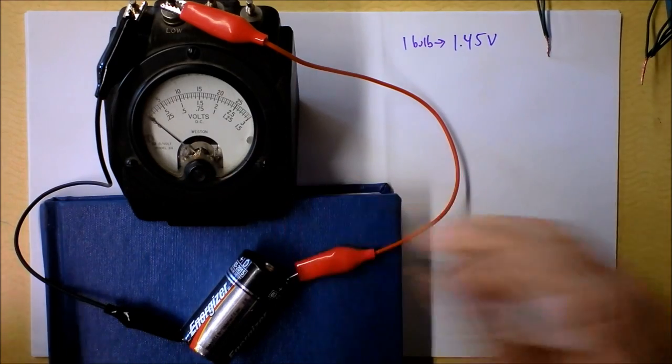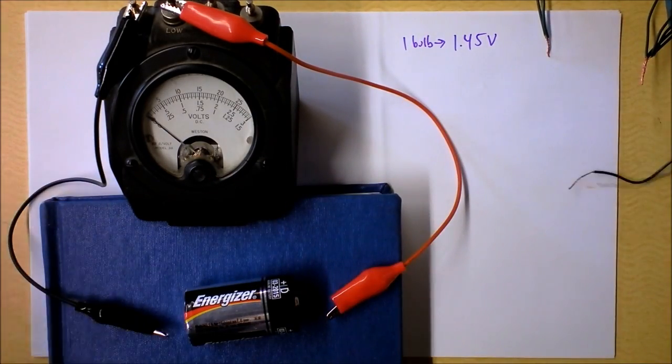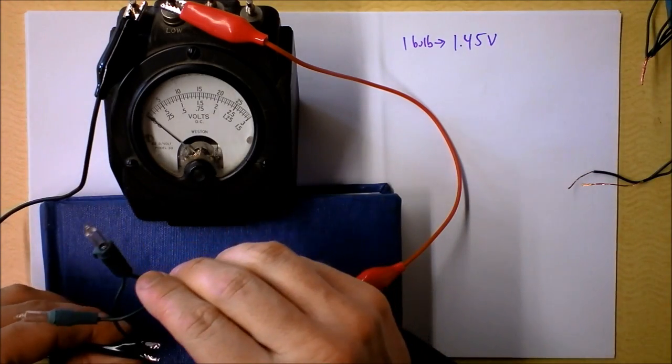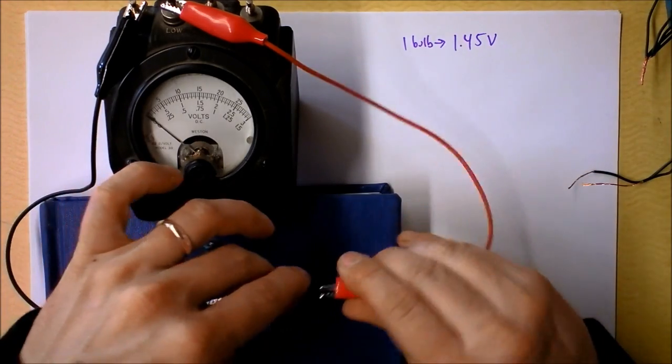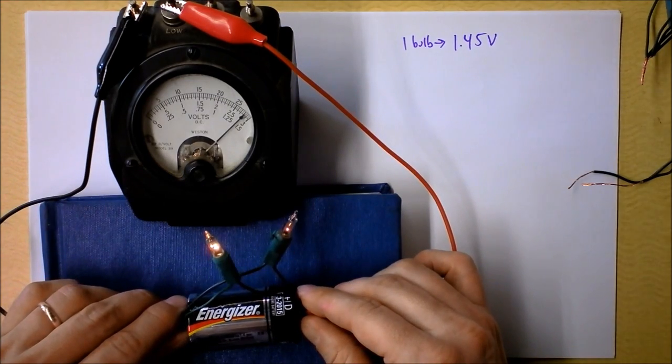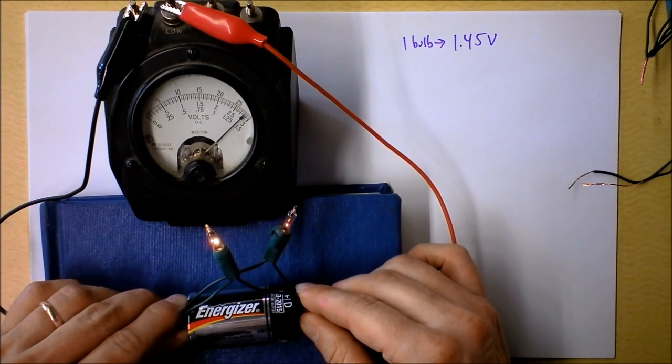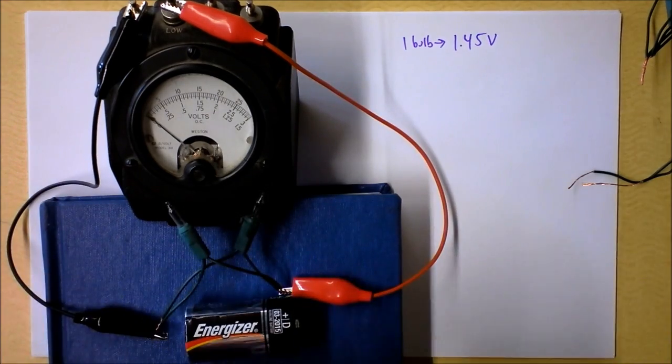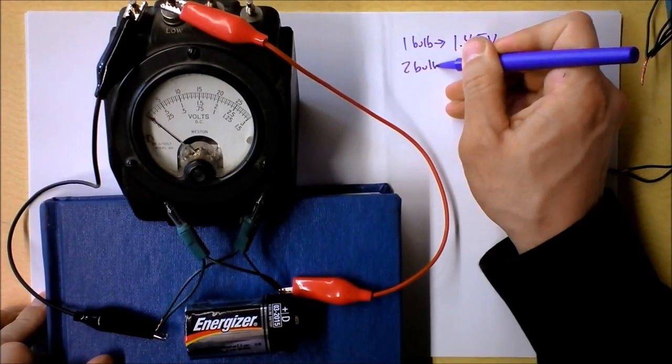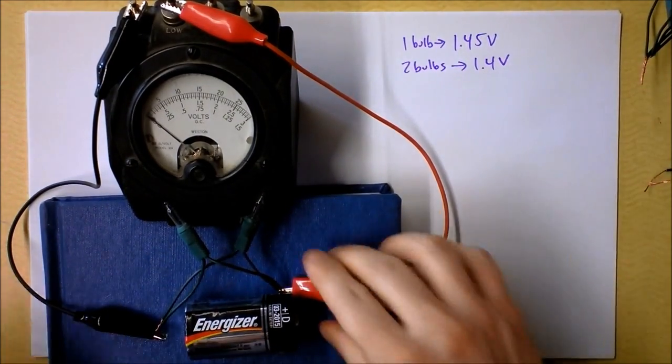That's with one bulb. It measures at 1.45 volts. So each of those ticks is a half of a tenth of a volt. Wow. A 20th of a volt. Okay. So now if I've got two of these on, let me clip these guys on here and do a little voltage test while I'm lighting up. And now it reads even less. Wow. That's a full tick down. So that's actually 1.4 volts.